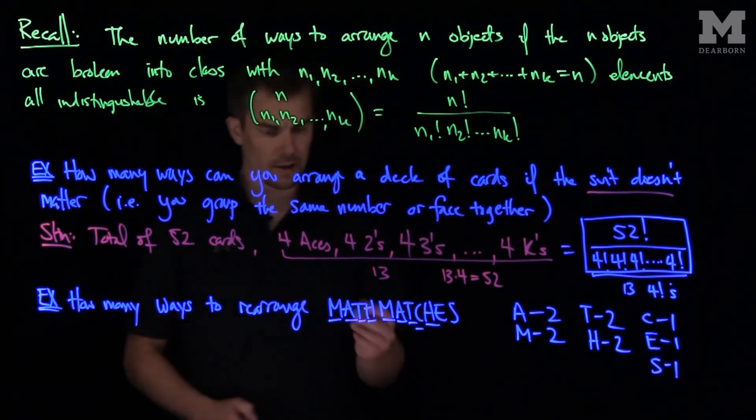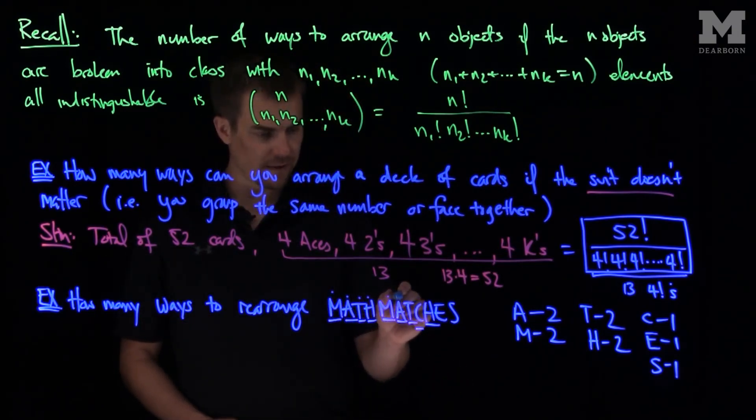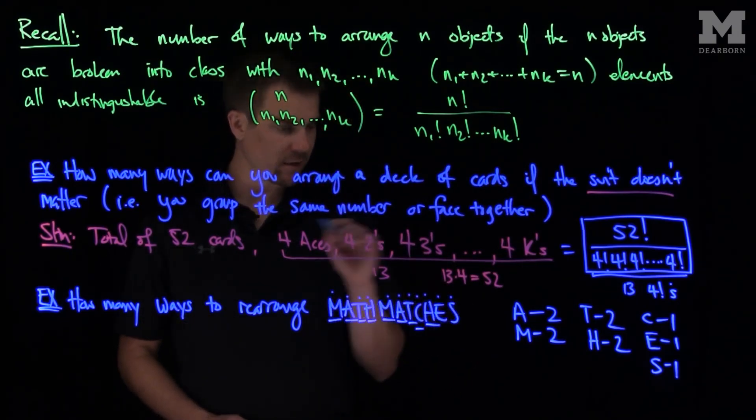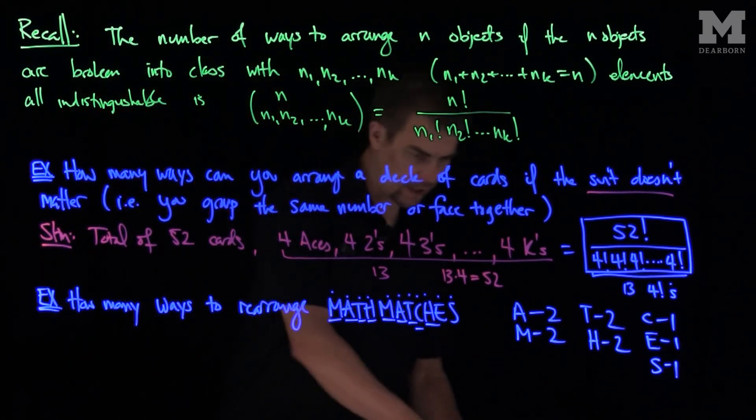So how many letters do we have total? 1, 2, 3, 4, 5, 6, 7, 8, 9, 10, 11. So there's 11 total, so the answer to this problem will be: